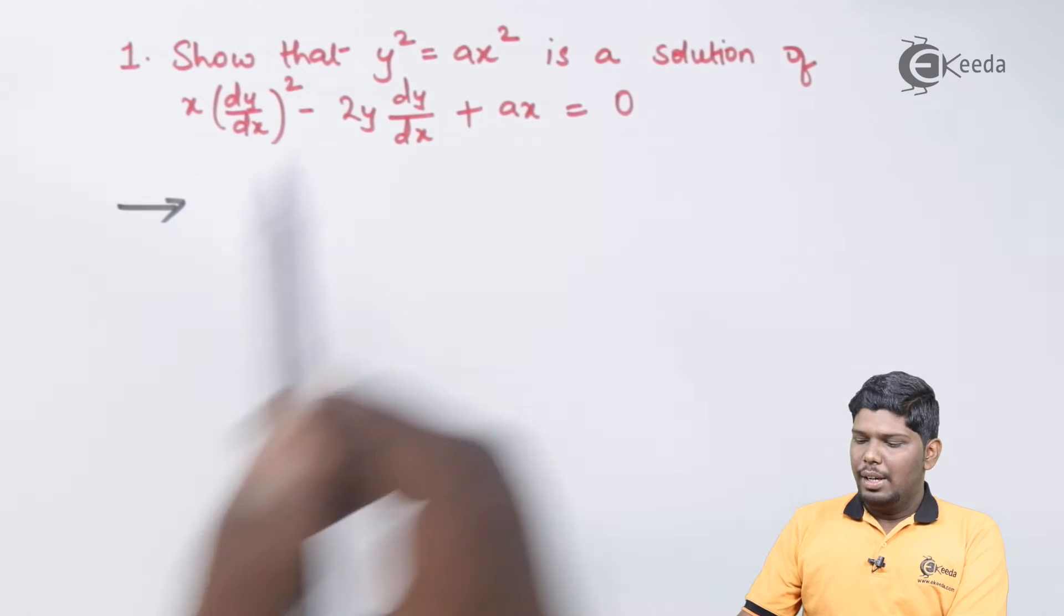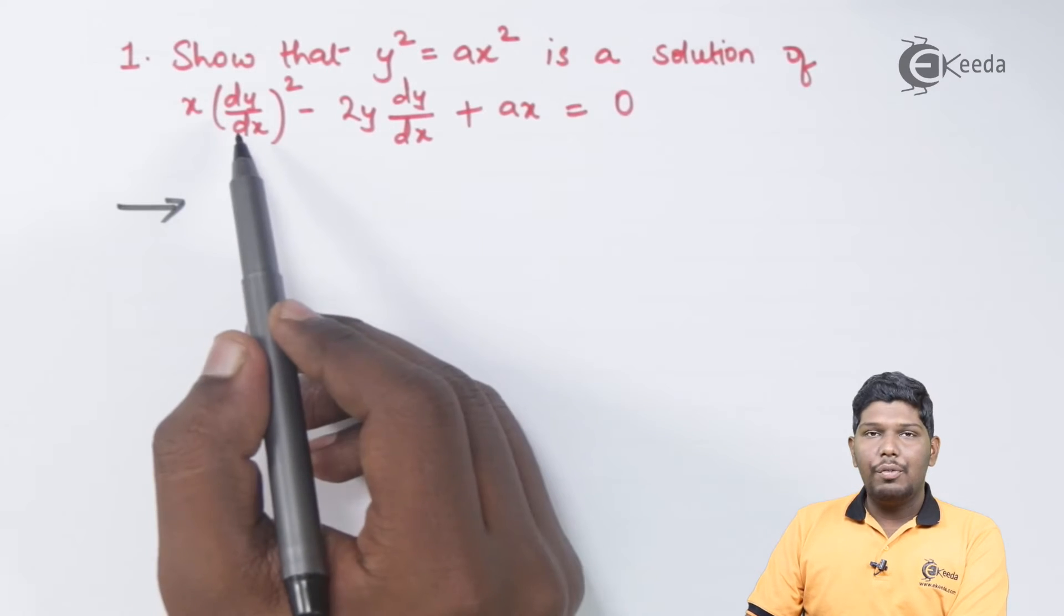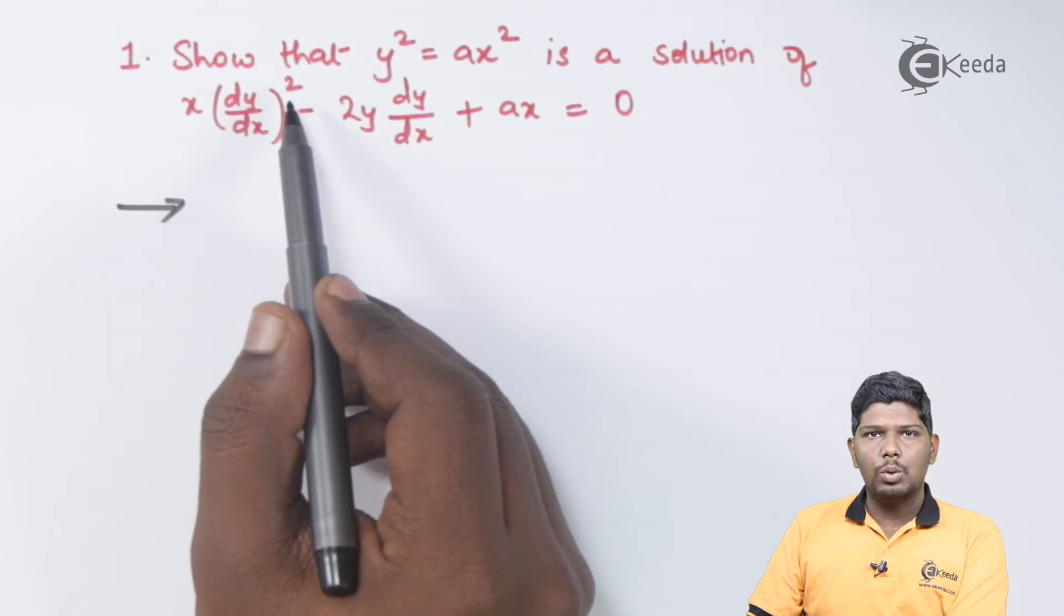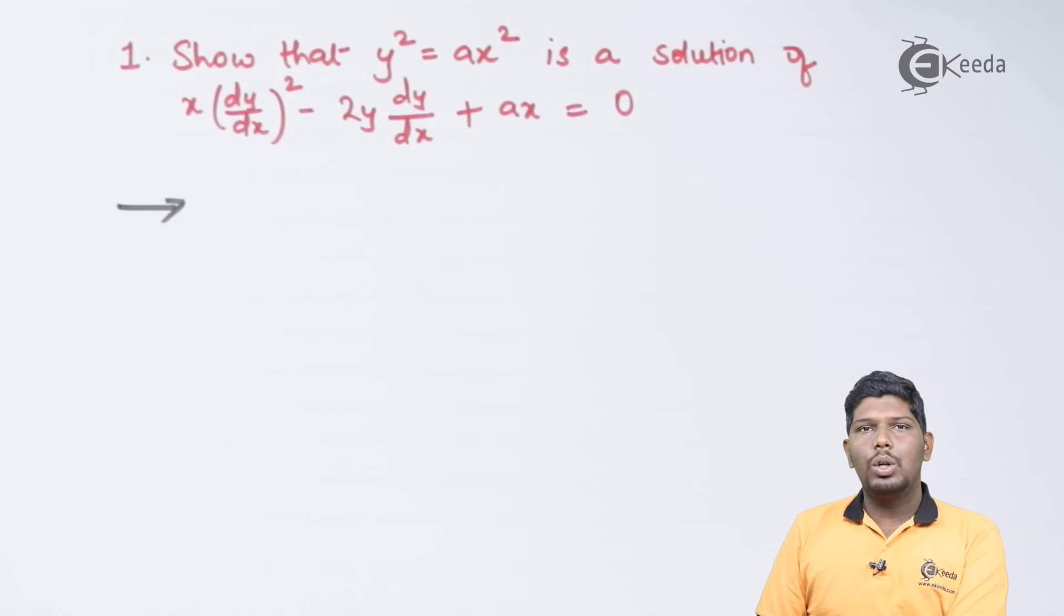Show that y² = ax² is a solution of the differential equation x(dy/dx)² - 2y(dy/dx) + ax = 0. The sums that we have seen in the previous videos which were based on formation of differential equations...